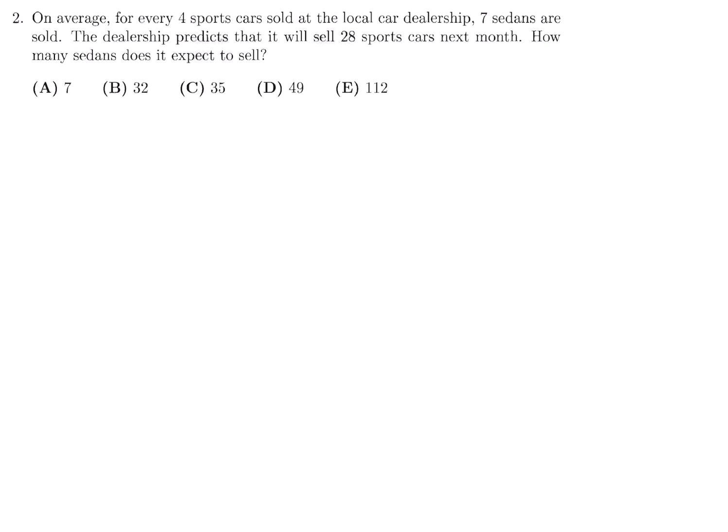On average, for every 4 sports cars sold at a local car dealership, 7 sedans are sold. The dealership predicts that it will sell 28 sports cars next month. How many sedans does it expect to sell? We have a ratio here of 4 sports cars to 7 sedans, and we apply the same ratio with 28 sports cars. And we don't know the number of sedans. That's what we have to figure out. So cross-multiply, 4X is equal to 7 times 28. And therefore, X is equal to 7 times 7, which is 49. So the dealership expects to sell 49 sedans if the ratio is the same.